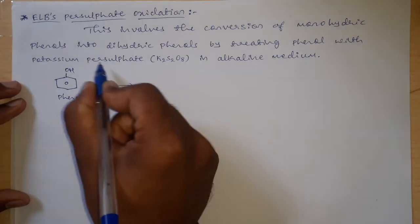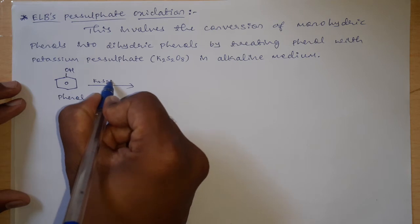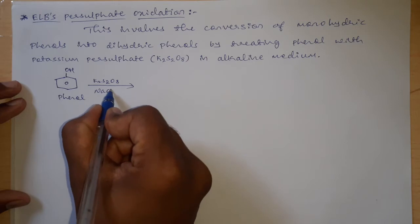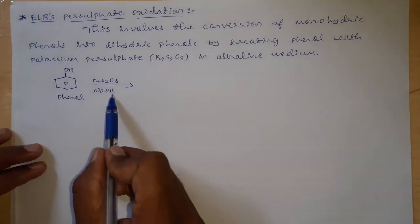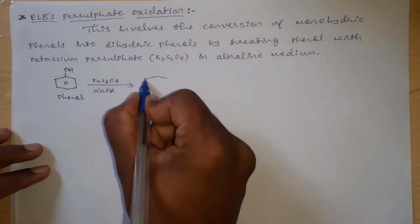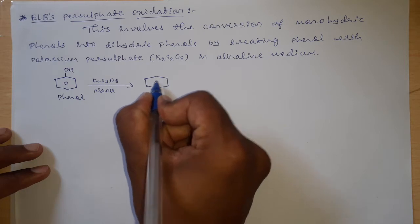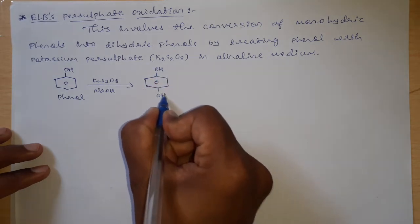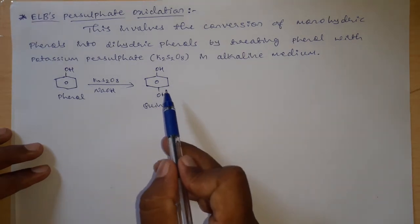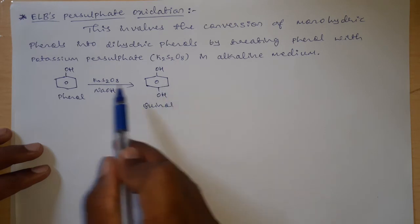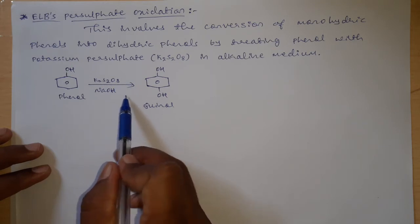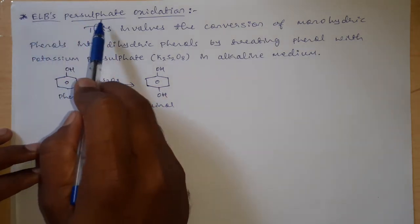When phenol is treated with potassium persulfate, K2S2O8, in alkaline medium — here I am using NaOH; any medium containing OH group or which can release OH minus, that is hydroxyl groups — we will get a product with two OH groups. This is quinol, a dihydric phenol. This conversion from phenol to quinol using potassium persulfate and NaOH is called Elbs' persulfate oxidation.